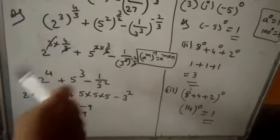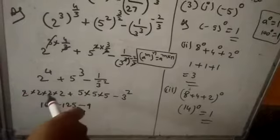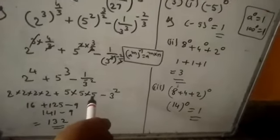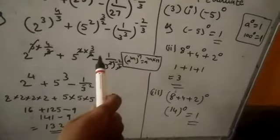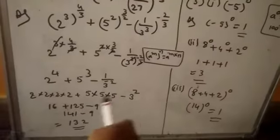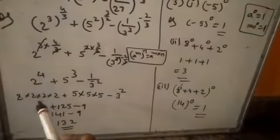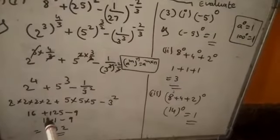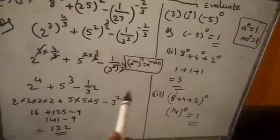See, 2 to the power of 4 — we can write 2 × 2 × 2 × 2, that is 4 times. Plus 5 cubed — we can write 5 × 5 × 5. Minus: here, 3 to the power of -2 will go to the numerator, and -2 becomes +2, so we multiply 3 squared. So: 2 × 2 × 2 × 2 = 16, plus 5 × 5 × 5 = 125, minus 3 × 3 = 9.